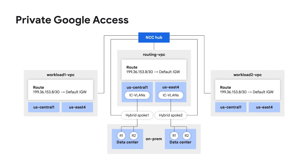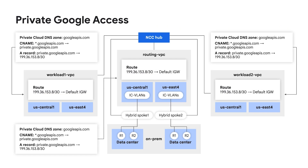Private Google Access is another method of API-based private connectivity. However, rather than creating endpoints inside your VPCs, you must use a Google-provided VIP. Ensure you have the proper route configured for the VIP and note that you are limited to just using the *.googleapis.com domain.